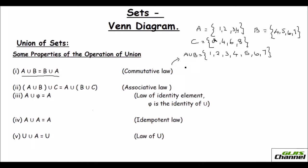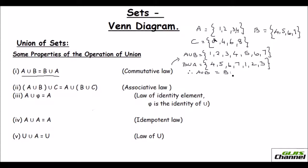Now let me do B union A to check the commutative law. Write B first: 4, 5, 6, 7. Then add set A: write 1, 2, 3 — you don't need to write 4 again because it's already there. Comparing A union B and B union A, both give {1, 2, 3, 4, 5, 6, 7}. So A union B equals B union A — the commutative law is verified.